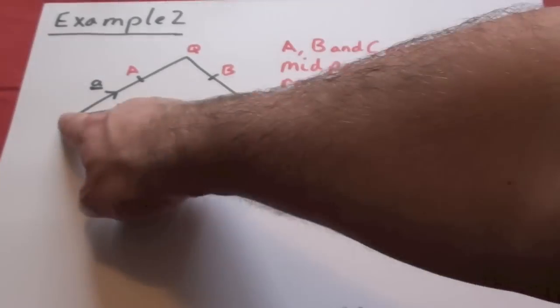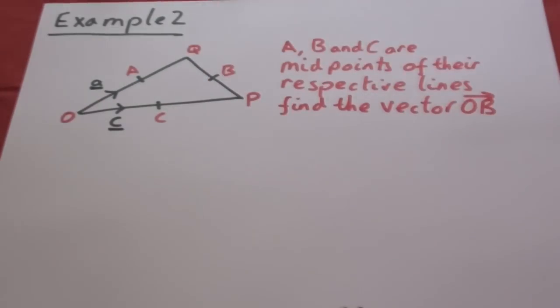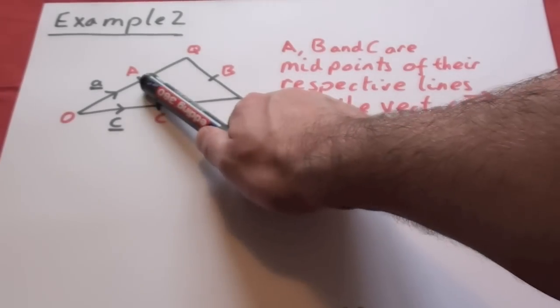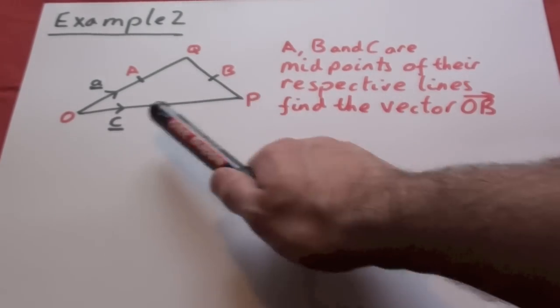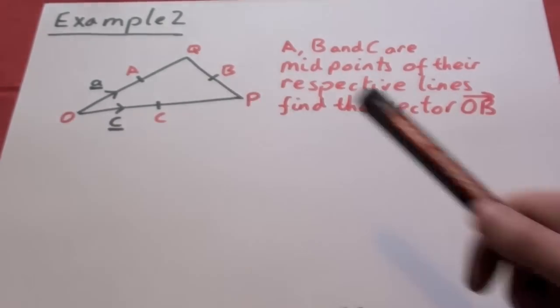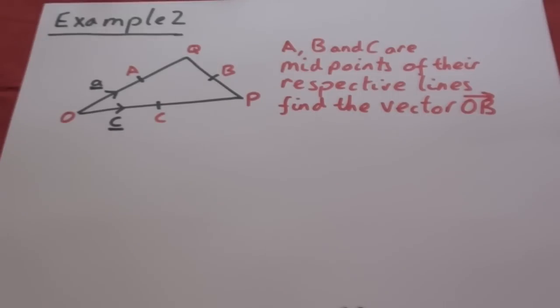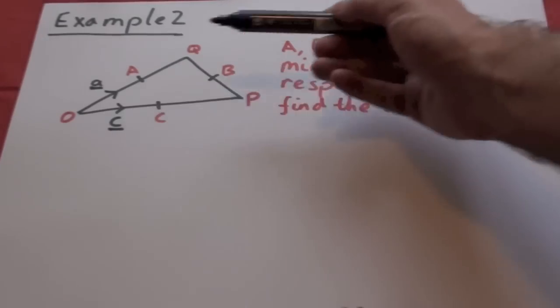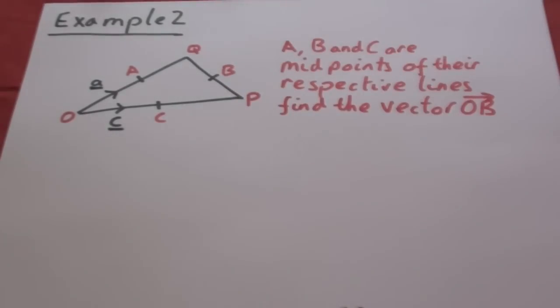Example 2. A, B and C are midpoints of their respective lines. We want to find the vector for O to B. So there's our midpoints noted. Now we want to go from O to B so we have to go O, P, P, B.